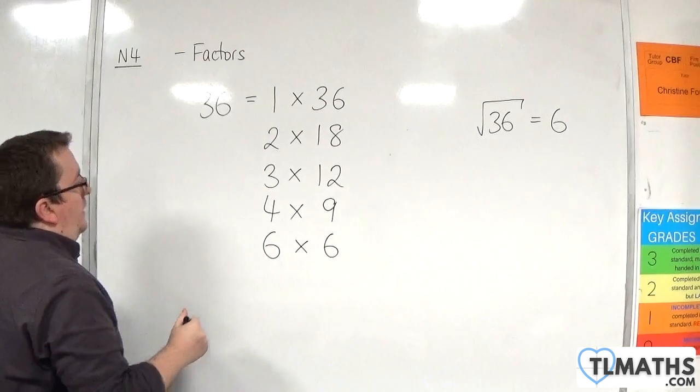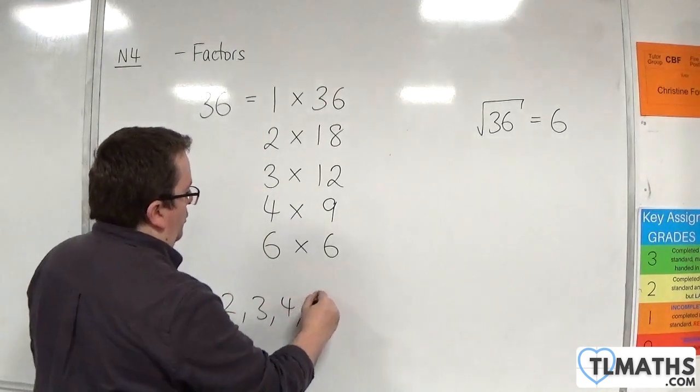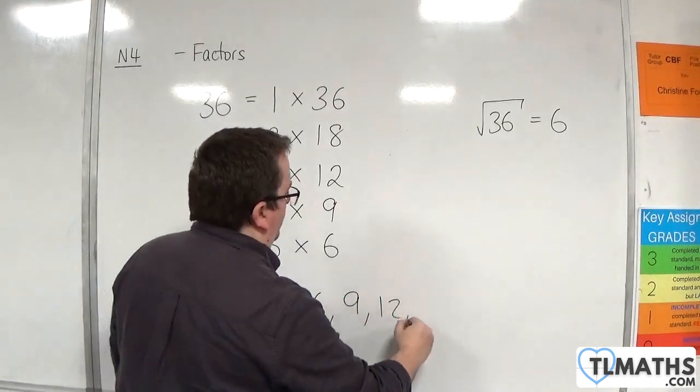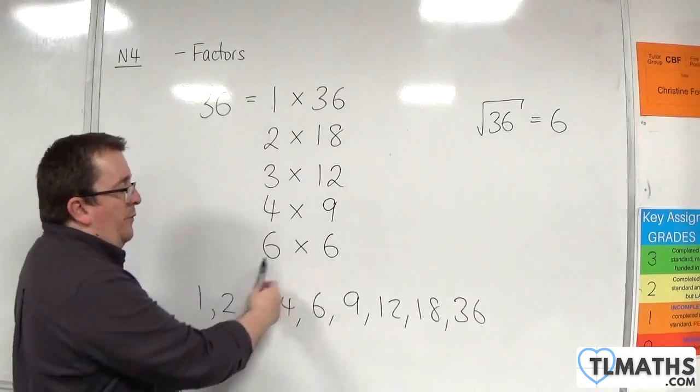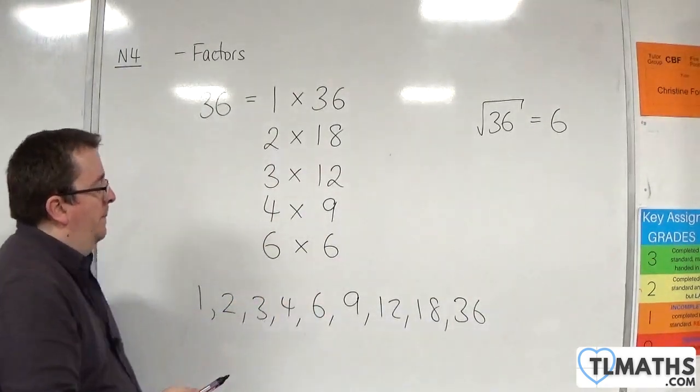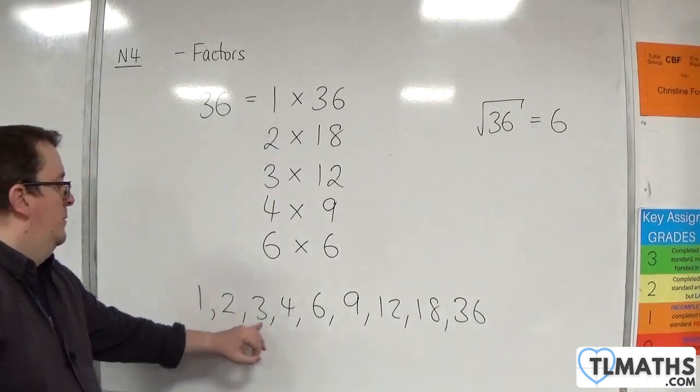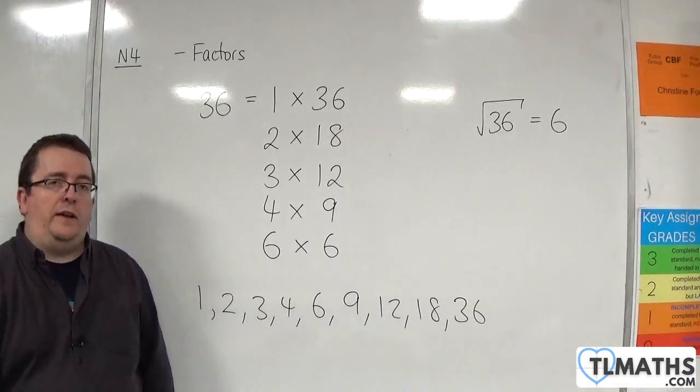The factors of 36 are 1, 2, 3, 4, 6, 9, 12, 18, and 36. We don't count the 6 twice. You only count one of them. So we have 1, 2, 3, 4, 5, 6, 7, 8, 9 factors of 36.